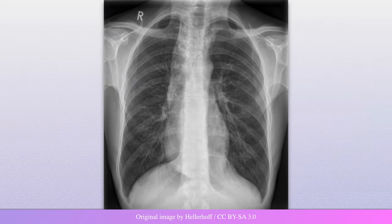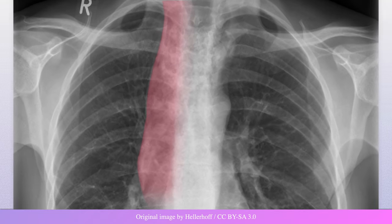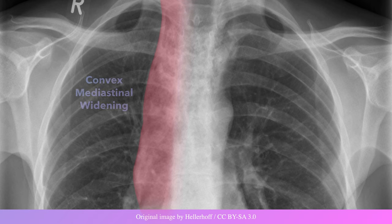The chest radiograph of an individual with achalasia may reveal an elongated opacity that overlaps and extends past the right mediastinum, resulting in a convex widening of the mediastinum. If there is stasis within the esophagus, then an air fluid level may be present.